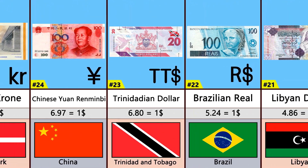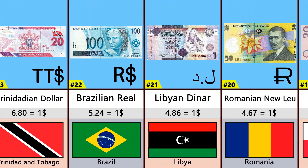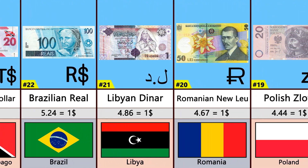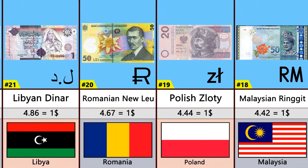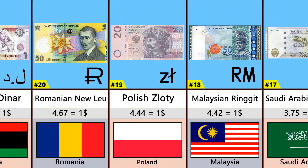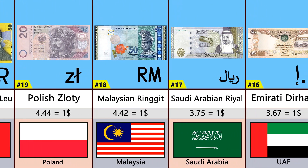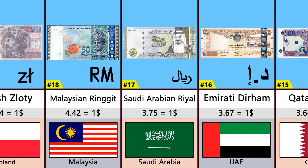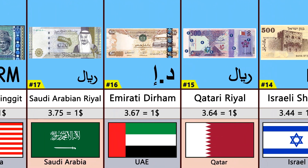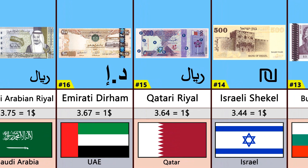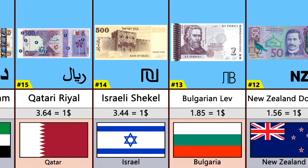Number 21: Libyan Dinar. Number 20: Romanian New Leu. Number 19: Polish Zloty. Number 18: Malaysian Ringgit. Number 17: Saudi Arabian Riyal. Number 16: Emirati Dirham. Number 15: Qatari Riyal.